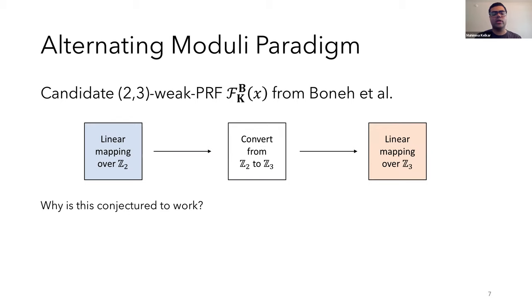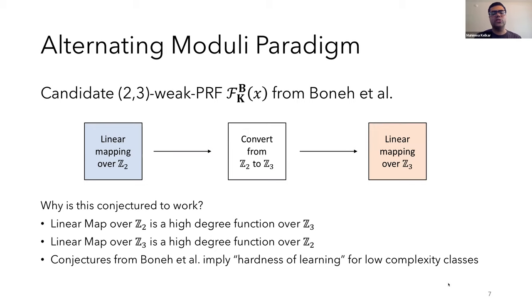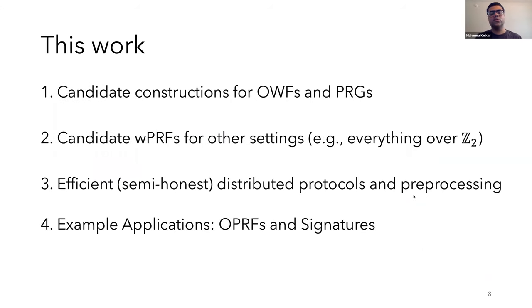So why is this conjectured to work? So as it turns out, a linear map over Z2 is a high degree function over Z3 and vice versa. High degree as in it cannot be approximated by low degree polynomials. Another conjecture from Boneh et al. implies hardness of learning for low complexity classes like depth 2, ACC0, and width 3 branching programs. So this work continues the exploration of designing new candidate constructions in this alternating moduli paradigm.